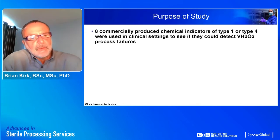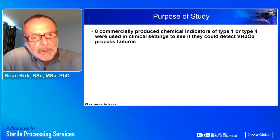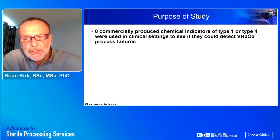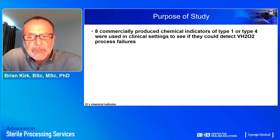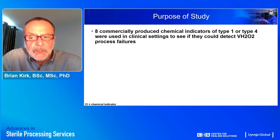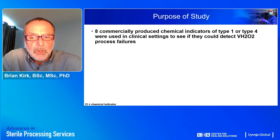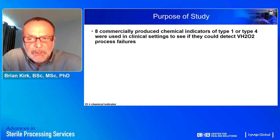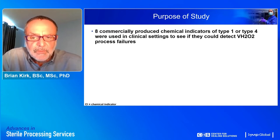The purpose of the study: eight commercially produced chemical indicators of type 1 or type 4 were used in clinical settings to see if they could detect hydrogen peroxide sterilizer processes operated according to the manufacturer's recommendations or operated outside of those recommendations — in other words, used off-label.